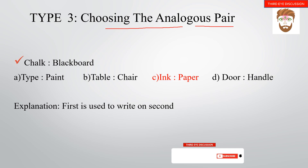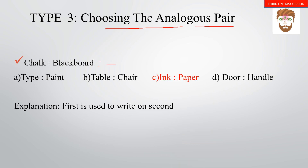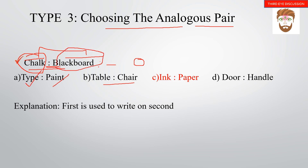Type 3 is choosing the analogous pair. For example: chalk is to doctor — how do you find this relationship? The first is used to write the second. Options include: type/print, table/chair, handle/door, ink/paper. So the answer is ink/paper, as the first is used to write with the second.